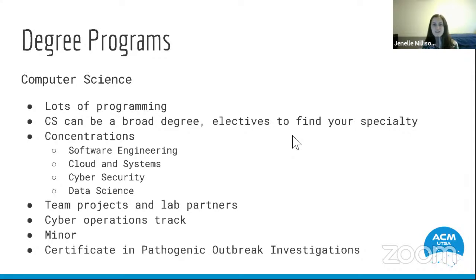Data science also gives you an introduction into machine learning and AI, because AI uses lots of data and it's important to have clean, correct data to enter into those models. There are some team projects in the CS degree program, like senior design where you build your own project. The College of Sciences also offers a cyber operations track — if you're really into cybersecurity, you can take basically all of the cybersecurity electives and get a certificate for completing the cyber operations track.